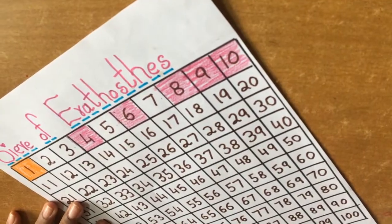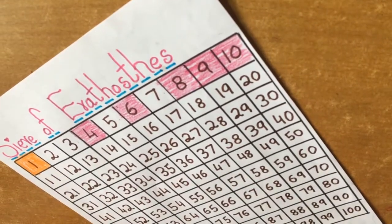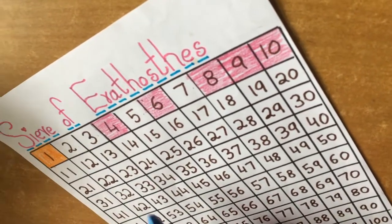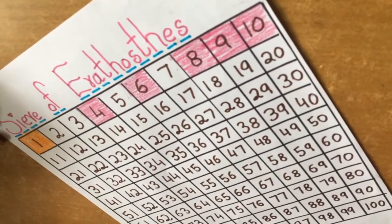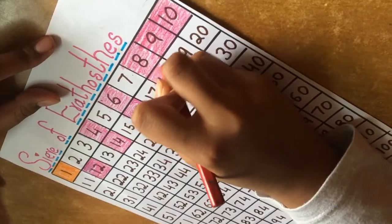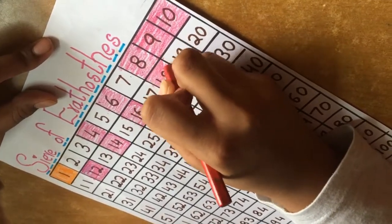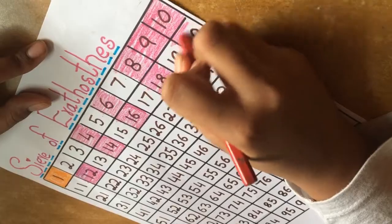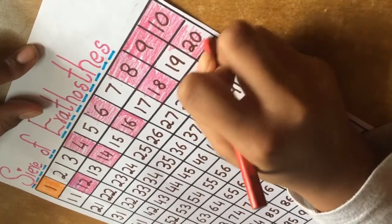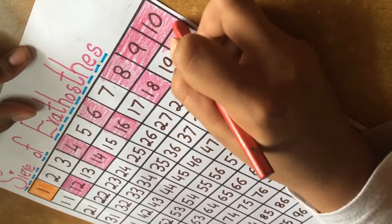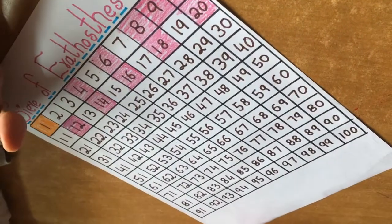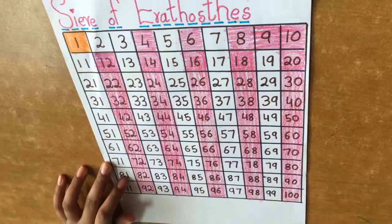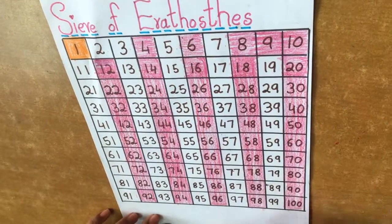Now we are going to check the multiples of 2. So we are going to color all the multiples of 2. Like this we are going to color all the 2 multiples. I marked all the 2 multiples.